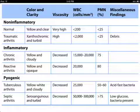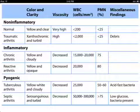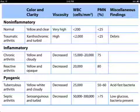In traumatic arthritis, the fluid is xanthochromic and turbid, viscosity is high, and the WBC count is still less than 2000 — very important. PMN is less than 25, and debris can be seen on other findings.